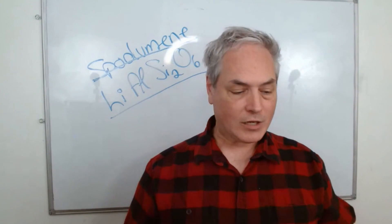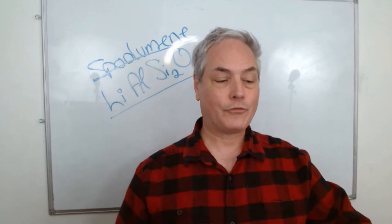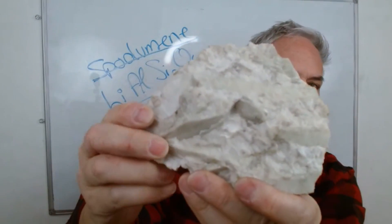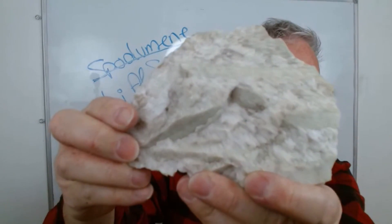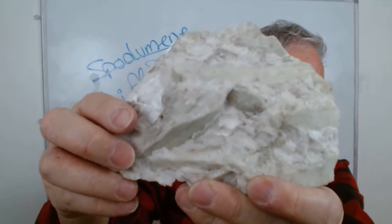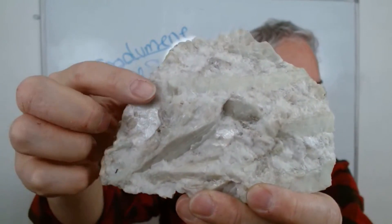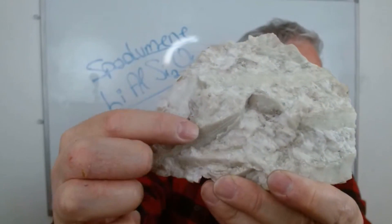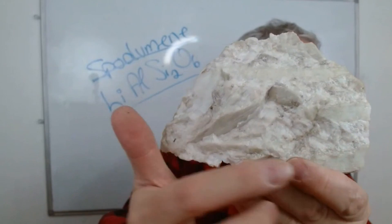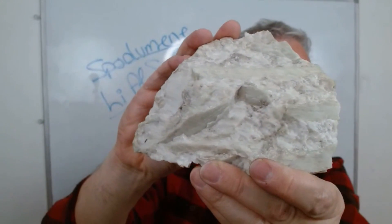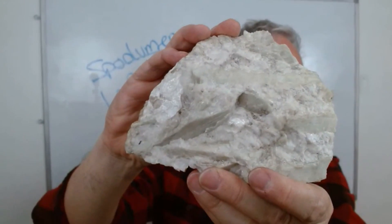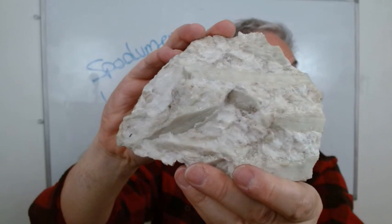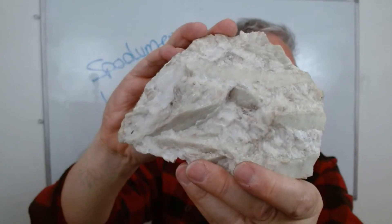On today's segment about mineralogy, I took a sample from my personal collection. Here you can see some long greenish crystals — there's one down here, there's one here. These crystals are crystals of spodumene. Spodumene is a mineral that contains lithium, aluminum, silicon, and oxygen.